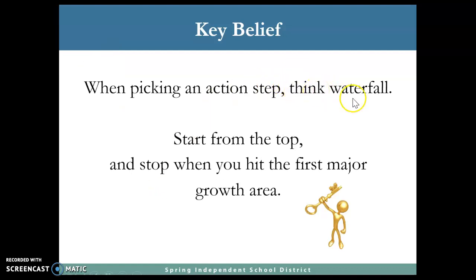When we are picking an action step, think of a waterfall. We are going to find the highest source of where it's coming from. You have to start from the top and stop when you hit the first major growth error. In other words, find the root — where you think you are going to start the action step — where it will solve and cascade down. If you feel that starting here would solve that and then some, that's the best way to think of what a waterfall is.